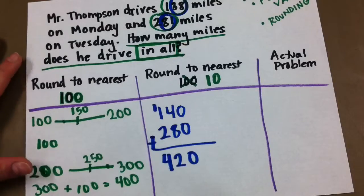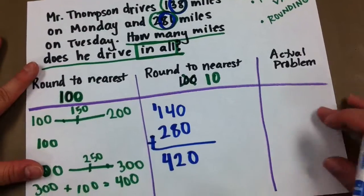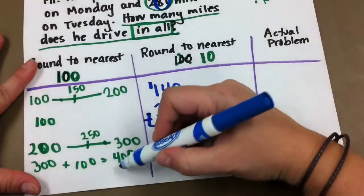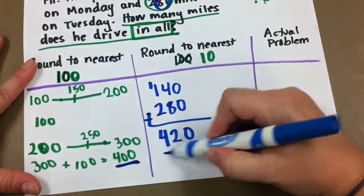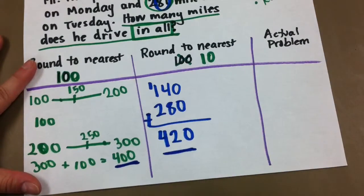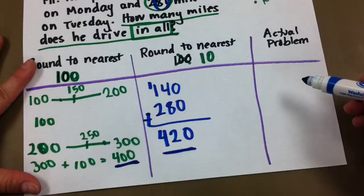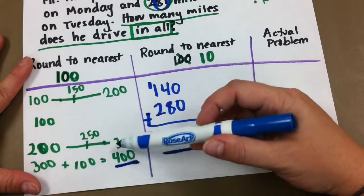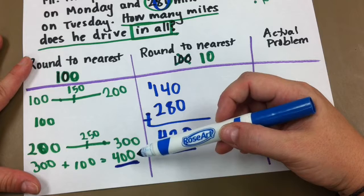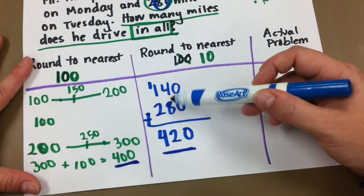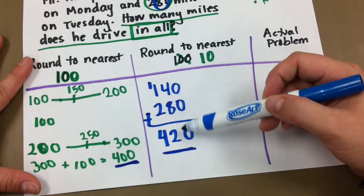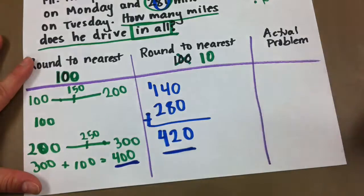Okay, now we're going to do the actual problem, boys and girls. And we're going to decide if our answer of 400 or 420 is closer to the actual problem's answer. So when we round to the nearest 100, will it get us closer to the actual answer? Or when we round to the nearest 10, will it get us closer to the actual answer?